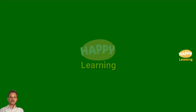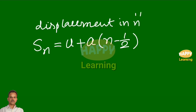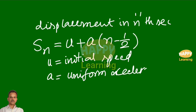This video is about the derivation of the formula Sn equal to u plus a into n minus half. This is called displacement in nth second. Here, u is initial speed and a is uniform acceleration. So, let us start.